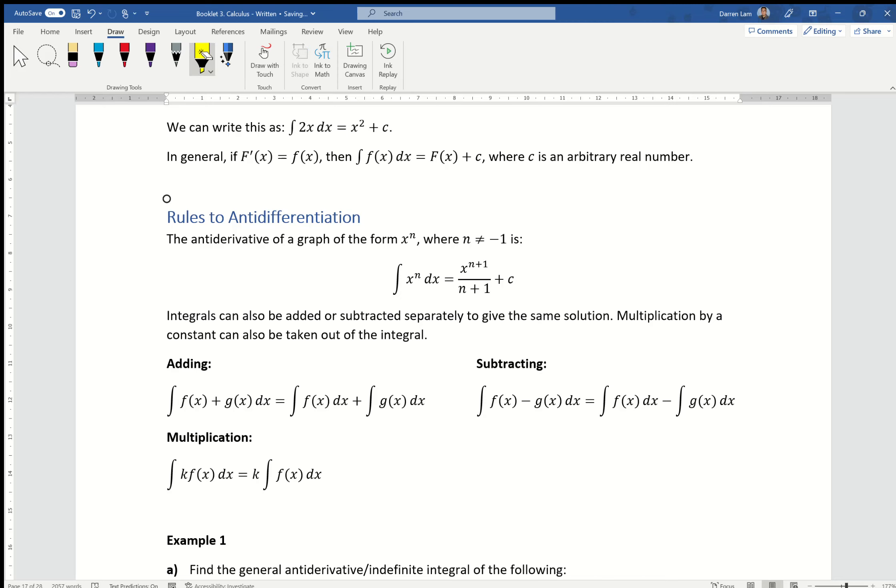So the rules to antidifferentiation, this one right here is what we're focusing on. So the idea is that if I have x to the power of n, for every time we antidifferentiate, we're going to increase the power by 1 and divide all of that by the power that we have that's new. It's the direct opposite of our differentiation. So differentiation, we bring the power down to the front and then minus 1. We're going to do the opposite. We want to plus 1 and then divide it instead. These adding, subtracting, multiplication rules are the same as you would be expecting per usual.